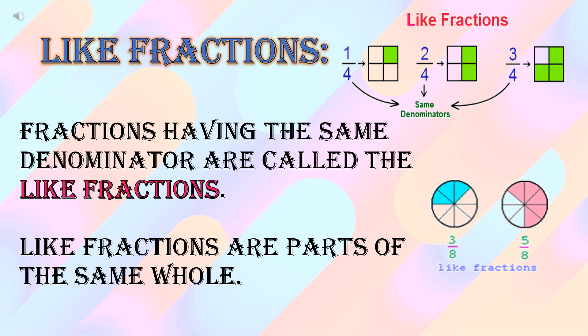One fourth means one upon four, where one is the numerator and four is the denominator. In two fourths, it is two upon four — two is the numerator and four is the denominator. In three fourths, three is numerator and four is denominator. So in all cases we have the same denominators, which are four. Ek hi whole ke jab hum different fractions ko consider kar rahe hote hain, that is called like fractions — in mein sab ke denominators same hoonge.